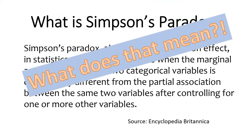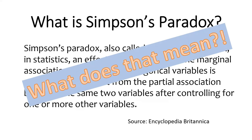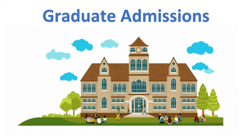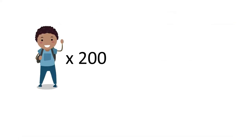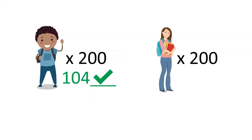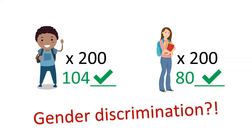So what does all that mean? Let's consider the case of graduate admissions at a university. This university has 200 male applicants and admits 104 of them. They also have 200 female applicants and admit 80 of them. So 52% of the male students get in, but only 40% of the women are admitted. Is this a case of gender discrimination?